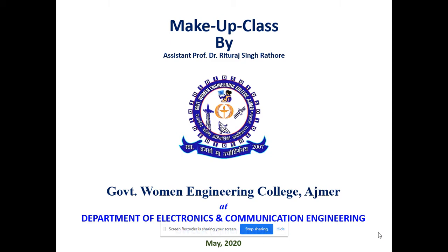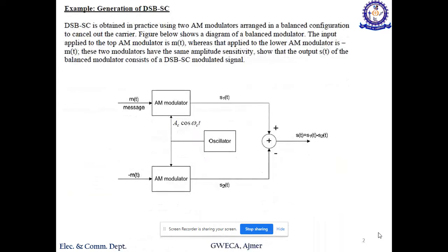Now in today's class we will discuss frequency shifting. Before discussing that, we have to cover the two assignment questions from last time. The first question: the DSB-SC signal is obtained in practice using two AM modulators arranged in a balanced configuration to cancel out the carrier. The figure below shows the diagram of a balanced modulator. The input applied to the top AM modulator is m(t), whereas applied to the lower modulator is -m(t). These two modulators have the same amplitude sensitivity. Show that the output of the balanced modulator consists of a DSB-SC modulated signal.